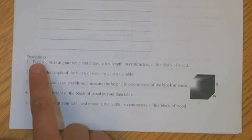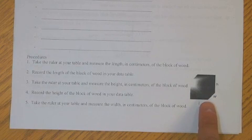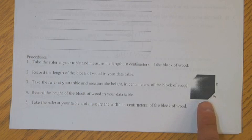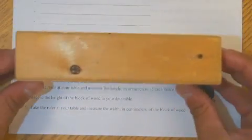So first off here in the procedures, it is showing us that we're starting with a block of wood. And it says, number one, take the ruler at your table and measure the length in centimeters of the block of wood. So here's my block of wood. Actually, I'm going to put it up on its side like this.